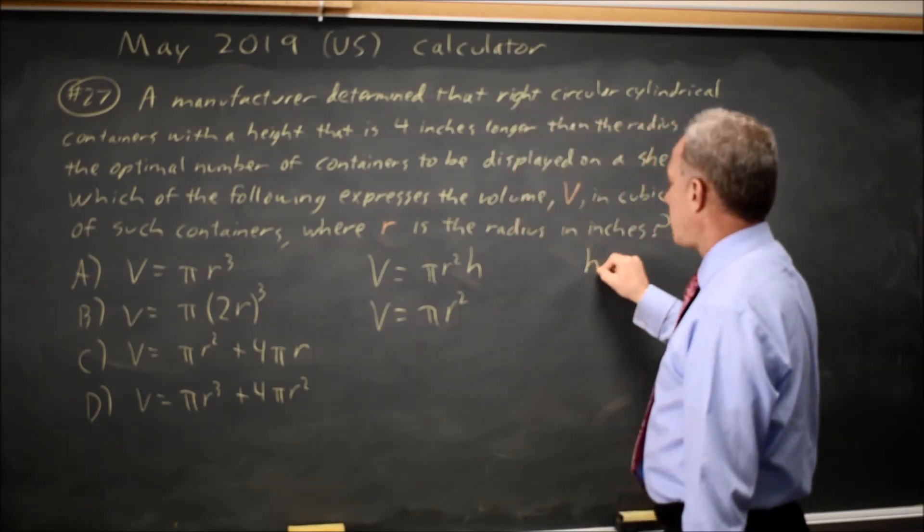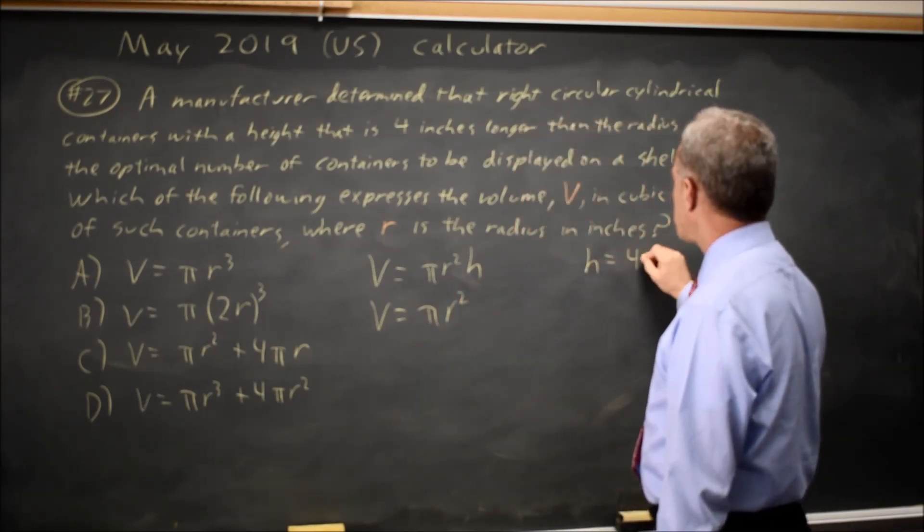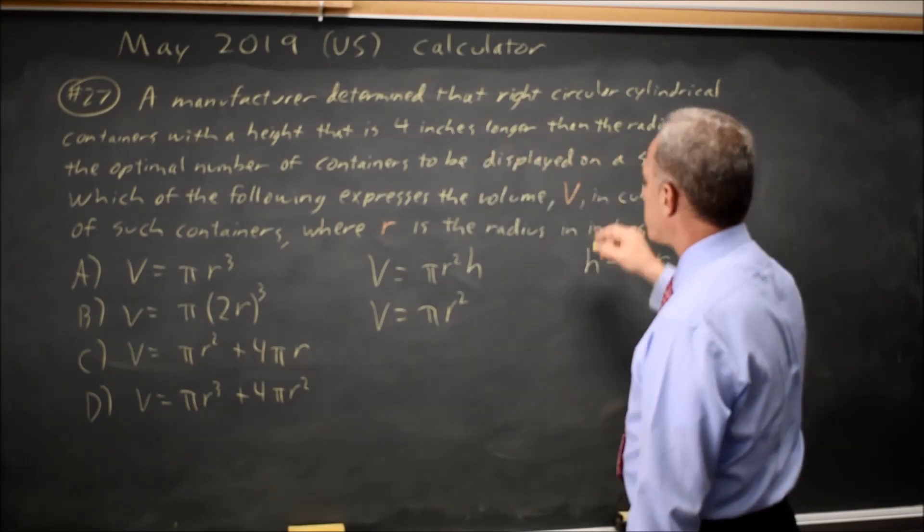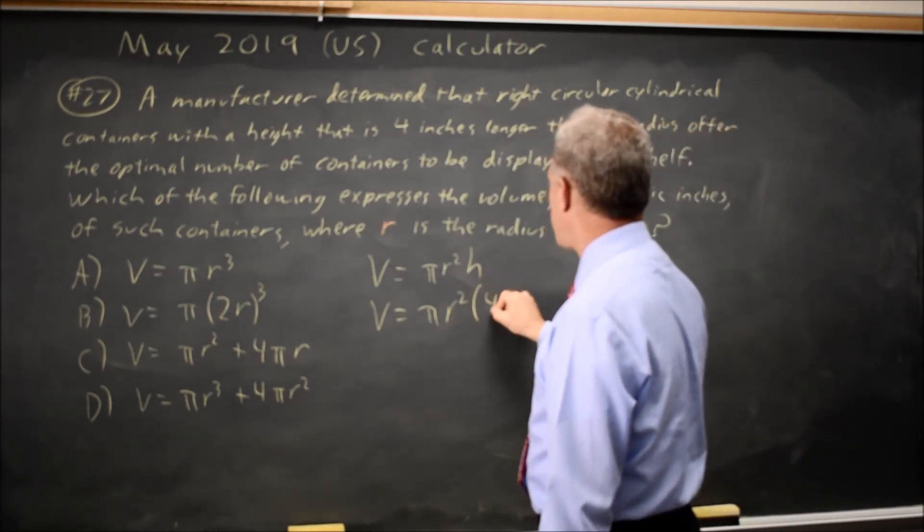So since they told us that h is 4 plus r, 4 inches longer than the radius, that's πr² times (4 + r).